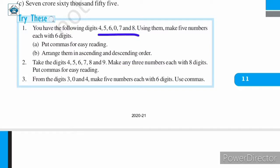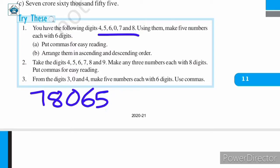First, let us make a number like this: seven, eight, zero, six, five, four. In order to read this number, let us put commas according to the Indian system of numeration — comma after three digits and comma after two digits. So this number is read as 7,80,654.